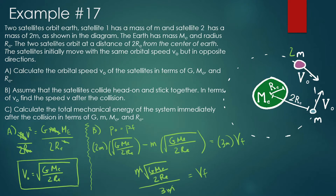We can maybe simplify a little bit more, but this is how it should look. So this will be our answer for Part B. Now let's look at Part C. Part C says: calculate the total mechanical energy of the system immediately after the collision in terms of G, m, M_E, and r_E. When we're looking at total mechanical energy, we're going to think about potential energy and kinetic energy.